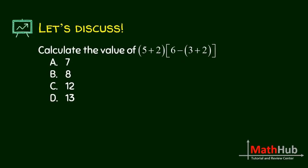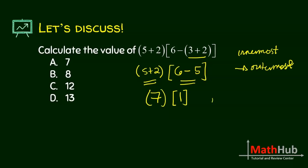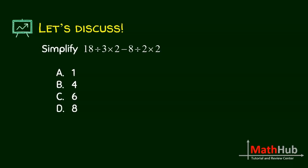Calculate the value of this. You have parentheses, which actually stands for grouping symbols. So whenever you have grouping symbols always start from innermost going to outermost. So start here, 6 minus 3 plus 2 is 5. Inside the parentheses, 6 minus 5 is 1. This is 7. Whenever you have parentheses like this, this means multiplication, so 7 times 1 you get 7.